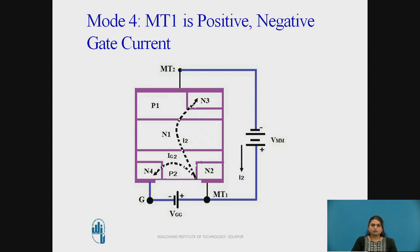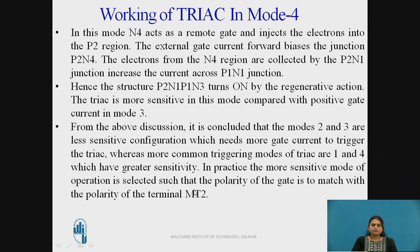In Mode 4, MT1 is positive and negative gate current is applied. The gate current flows through the P2 N4 junction and the main current flows from MT1 to MT2. N4 acts as a remote gate and injects electrons into the P region, and the external gate current forward biases the junction P2 N4. Electrons from the N4 region are collected by the P2 N1 junction, increasing the current across P1 N1. Hence the structure P2, N1, P1, N3 turns on by regenerative action. The TRIAC is more sensitive in this mode compared with positive gate current in Mode 3.